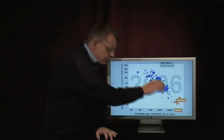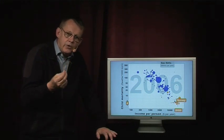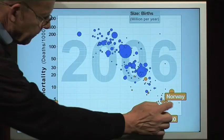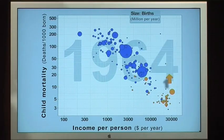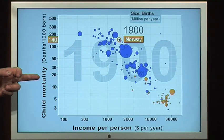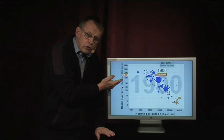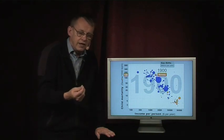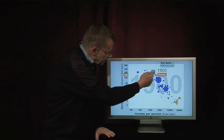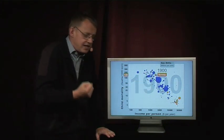Norway is a very successful country with very high income and very low child mortality today. If I take Norway backwards in history, it lands in the year 1900, when Norway had a high child mortality of 140 children dying per every 1,000 born — up among the countries with the highest child mortality today.